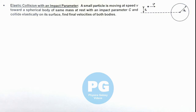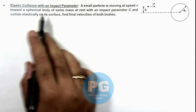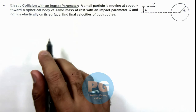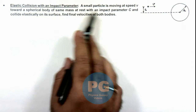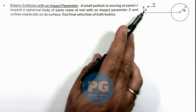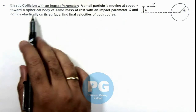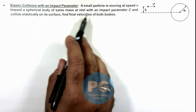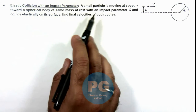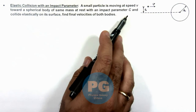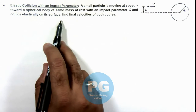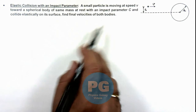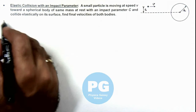In this illustration we'll discuss the elastic collision with an impact parameter. A small particle is moving at a speed v toward a spherical body of the same mass at rest, with an impact parameter c. It collides elastically on the surface, and we are required to find the final velocities of both bodies.